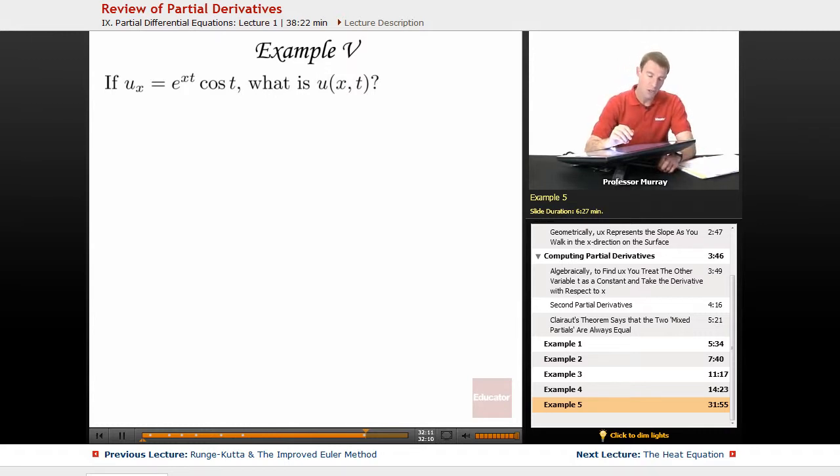So essentially what we're going to do is integrate with respect to x. So I'm going to integrate, equals the integral of e to the xt cosine t dx. But now that means we're integrating with respect to x, so t is a constant. It's just like when we took the derivative with respect to x, we held t as constant.